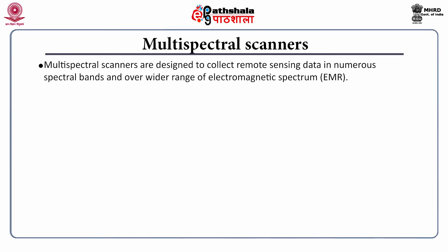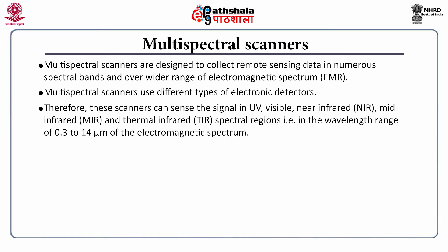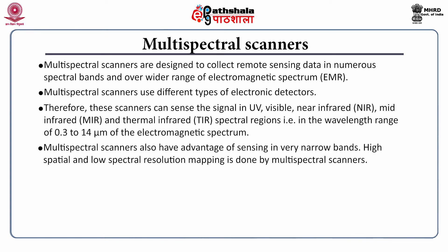Multispectral scanners are designed to collect remote sensing data in numerous spectral bands over a wider range of the electromagnetic spectrum. These scanners use different types of electronic detectors, and therefore can sense signals in ultraviolet, visible, near infrared, middle infrared, and thermal infrared spectral regions — that is, in the wavelength ranges of 0.3 to 14 micrometers. Multispectral scanners also have the advantage of sensing in very narrow continuous bands, and they perform high spatial and low spectral resolution mapping.